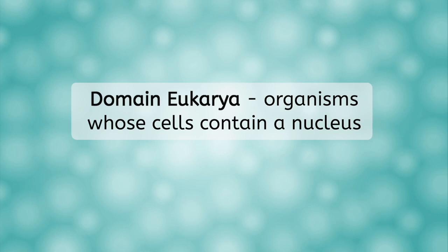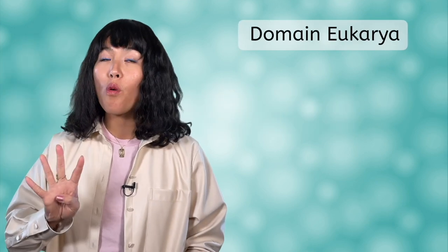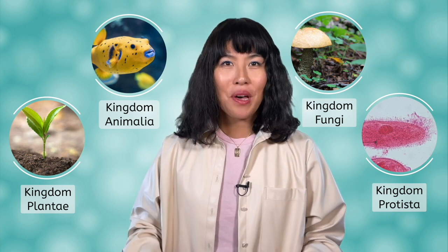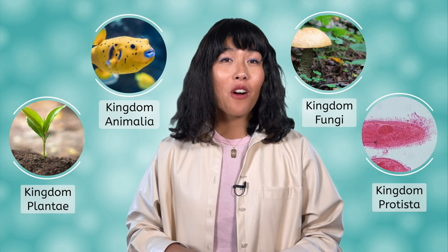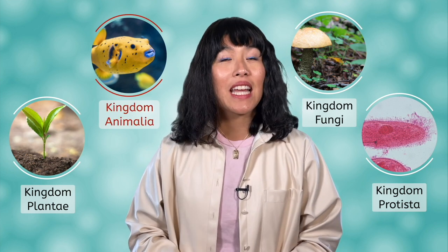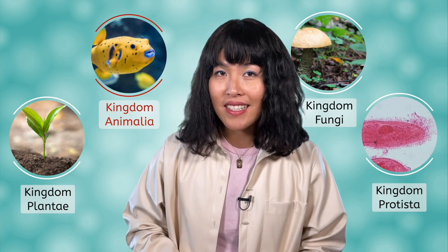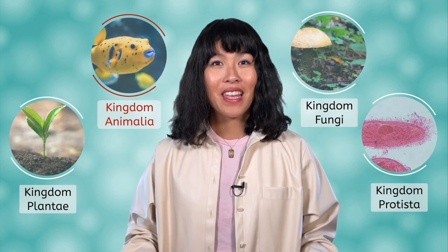Eukarya organisms are composed of eukaryotic cells, meaning they contain a nuclear membrane and therefore a contained nucleus. Under the classification of domain eukarya, there are four kingdoms: animalia, fungi, plantae, and protista. Each kingdom has its own characteristics. Most of the examples we are discussing in this lesson fall under the kingdom animalia, which contains many phyla, classes, orders, families, genera (which is the plural of genus), and species. Each of these classification levels provides important characteristics that apply to each specific animal.